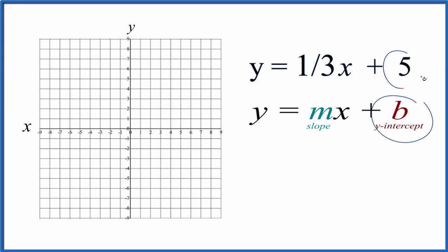b, that's the y-intercept, and that's 5. So we're going to go up on the y-axis here, 5. That's where we're going to cross the y-axis. That's our y-intercept.